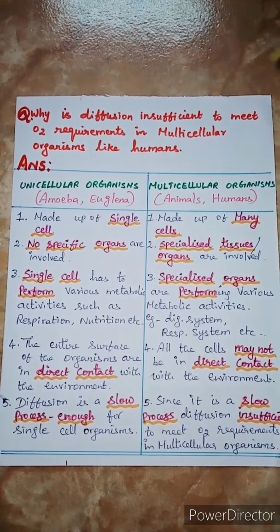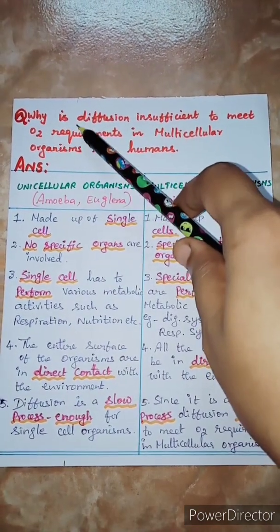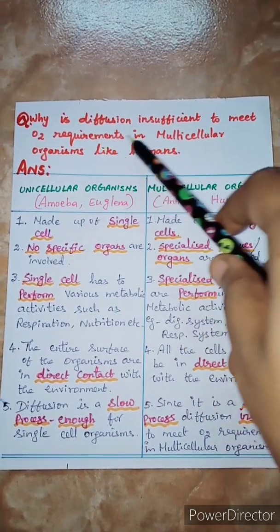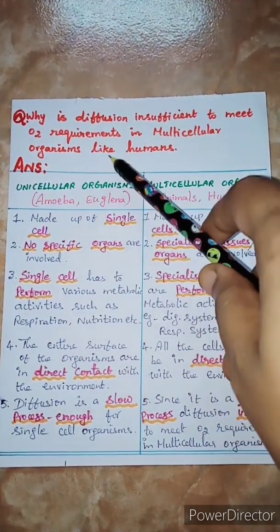Hello students, now I am going to explain to you why diffusion is insufficient to meet oxygen requirements in multicellular organisms like humans.